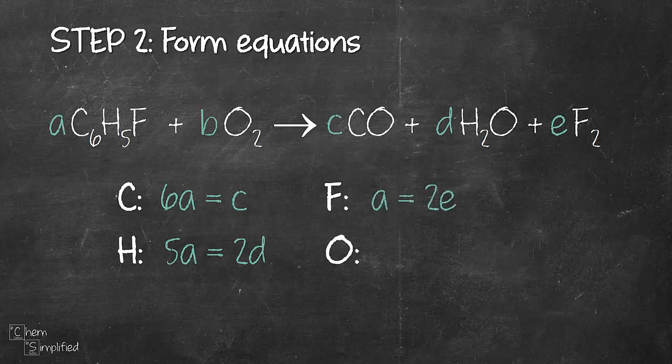Last but not least, for oxygen we have 2 on the left, multiply with B gives us 2B. On the right side we have oxygen on both CO and H₂O terms, so we'll need to add them up. Let's start with CO. We have 1 oxygen multiply with C gives us 1C. For the H₂O term there's also 1 oxygen, so multiply 1 with D that will give us 1D. Therefore we have C plus D on the right-hand side, giving us the last equation: 2B equals C plus D.